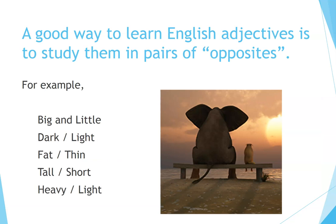A good way to learn adjectives is to study them in pairs of opposites. For example: big and little, dark and light, fat and thin, tall and short, heavy and light.